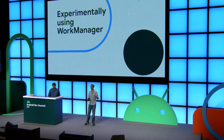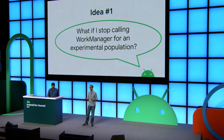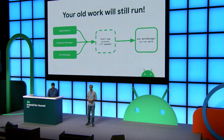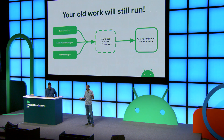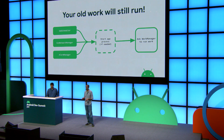Let's take a brief detour that ties right back into this concept. An internal team at Google came to me and asked — they want to run WorkManager experimentally and do A-B experiments with it. Their first idea was: what if I stop calling WorkManager for an experimental population? Going back to that flowchart, your old work will actually still run. Because you enqueued this work in the past and then stopped using WorkManager for this user, all of that work is still remembered by the OS. It'll start the app process and ask WorkManager to run the work. So that's not what they wanted.